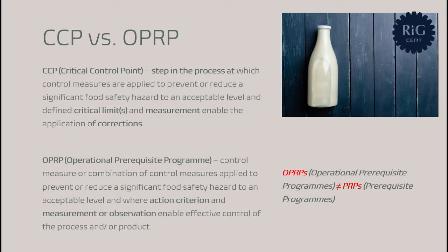A critical control point, a CCP, is a step in the process at which control measures are applied to prevent or reduce a significant food safety hazard to an acceptable level. The second part of the definition, which is also very important: defined critical limits and measurement enable the application of corrections.